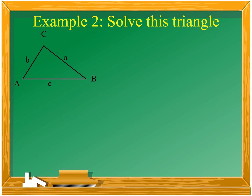Another example of AAS — two angles and one adjacent side. Our given values are: angle A is 45 degrees, angle B is 50 degrees, and side a is equal to 30. First, we will solve for the value of angle C. By mentally solving: what is the value of C? Very good — it is 85 degrees.